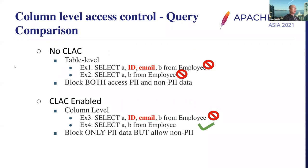Let's understand column encryption from an example. Column encryption provides column-level access control, which we call CLAC. Without CLAC, suppose we have an employee table with two sensitive fields — ID and email — and other normal fields. When we select ID and email from this table, it will be blocked. But selecting other non-sensitive columns A and B will also be blocked. With CLAC enabled, selecting sensitive columns ID and email is blocked, but selecting A and B — the non-sensitive columns — can succeed. It blocks only personal information data but allows non-PII data to go through.